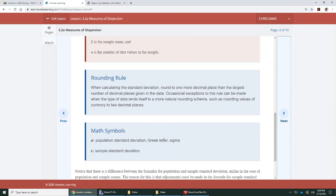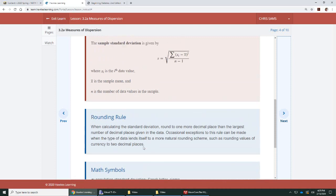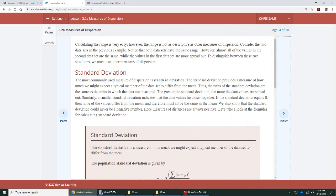Here they're telling you what this is. Greek letter sigma and sample standard deviation is s. This says how we might expect a typical member of the data set to differ from the mean. If the standard deviation equals zero, then none of the values are different. Sometimes they're all the same. Then it'll be different.